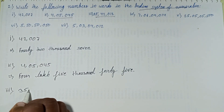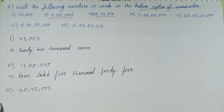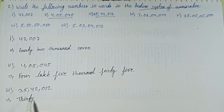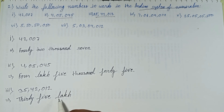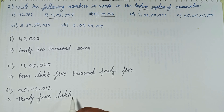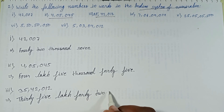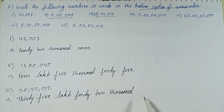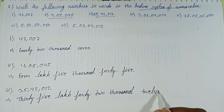Third question: 35,42,012. Count from the right — ones, tens, hundreds, thousands, ten thousands, lakhs. We get thirty-five lakhs, forty-two thousand, and twelve. Answer: Thirty-five lakh forty-two thousand twelve.